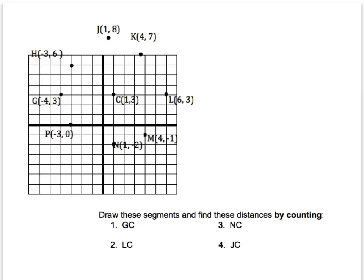So the first four problems, we're just asked to find the distances of four segments on our graph. GC is going to be this distance, this segment right here. And if we count, because it's a horizontal line, the distance is just one, two, three, four, five units long.